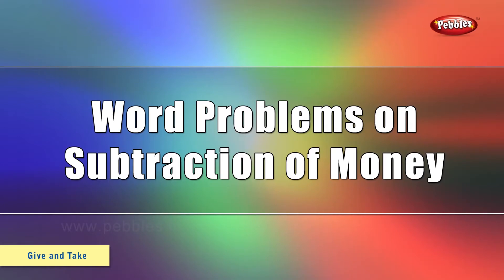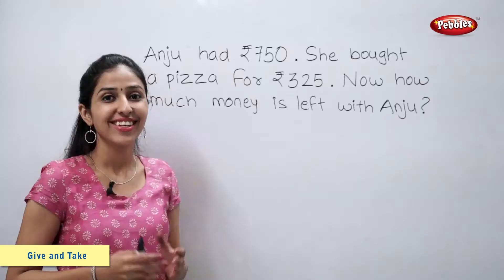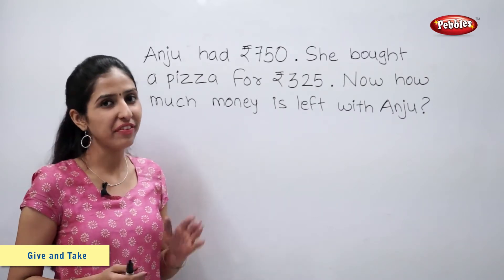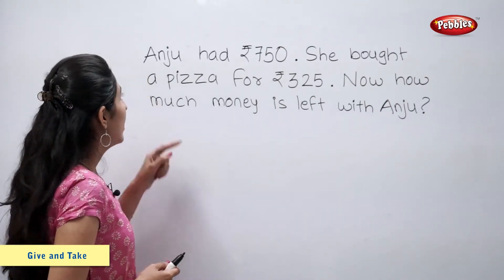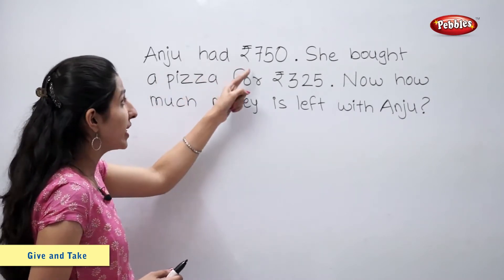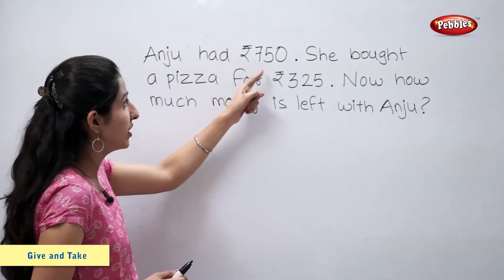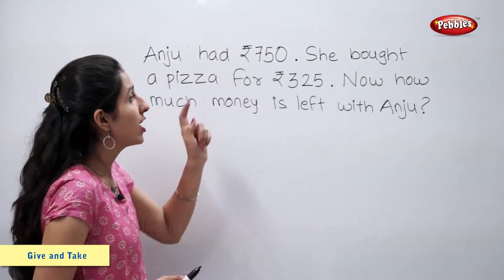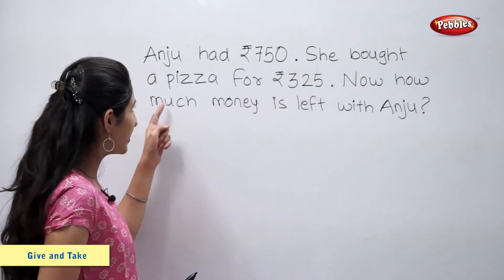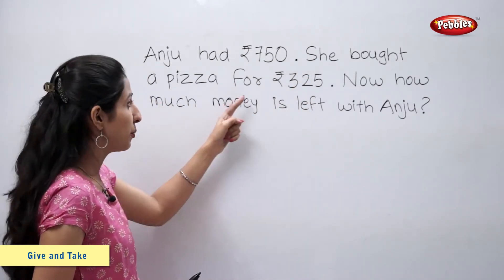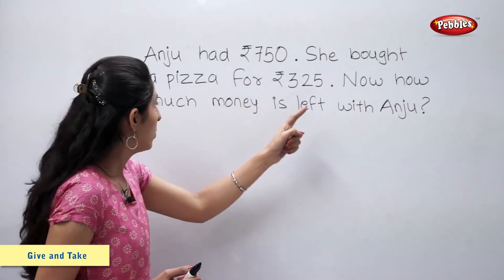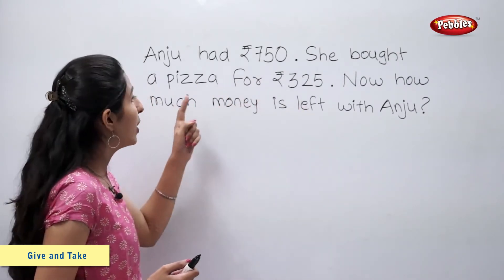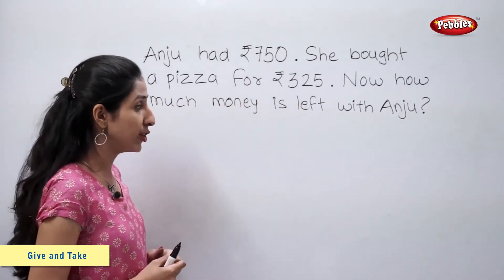Word problems on subtraction of money. Students, let us solve this example. Anju had rupees 750. She bought a pizza for rupees 325. Now, how much money is left with Anju?